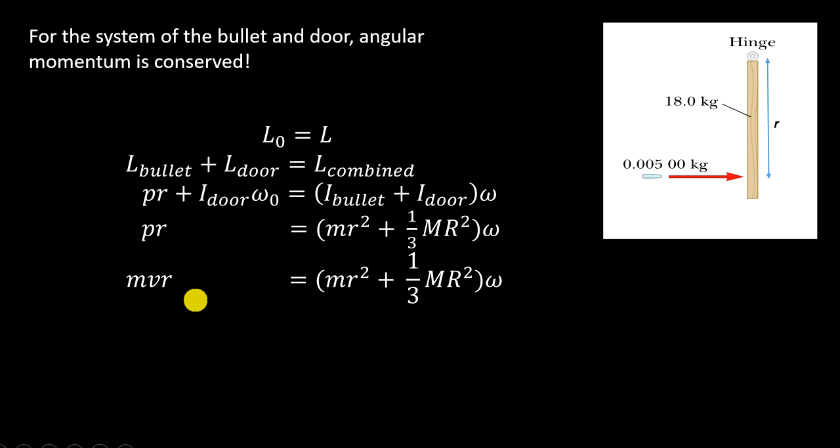Well, that's how I could set it up. If I know the mass of the bullet, the velocity of the bullet, the r of the bullet, again, this distance r, the mass of the door, the radius of the door, I could solve for, depending on what I'm given, certain quantities.